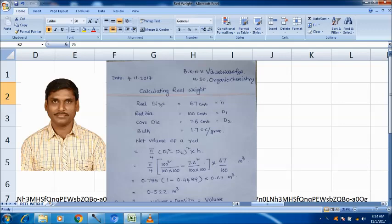Calculating reel weight: reel size 67 cm, reel dia 100 cm d1, core dia 7.6 cm d2, bulk 1.7 cc per gram.